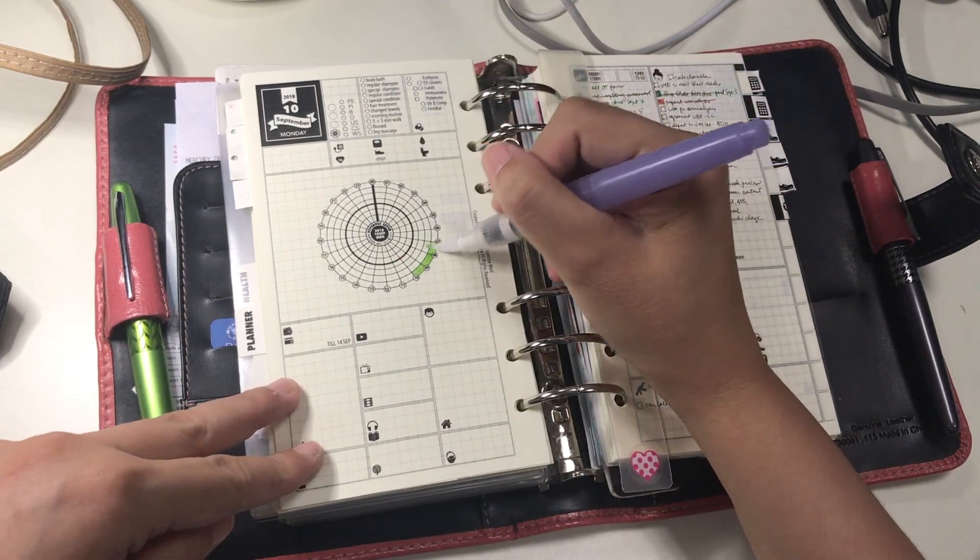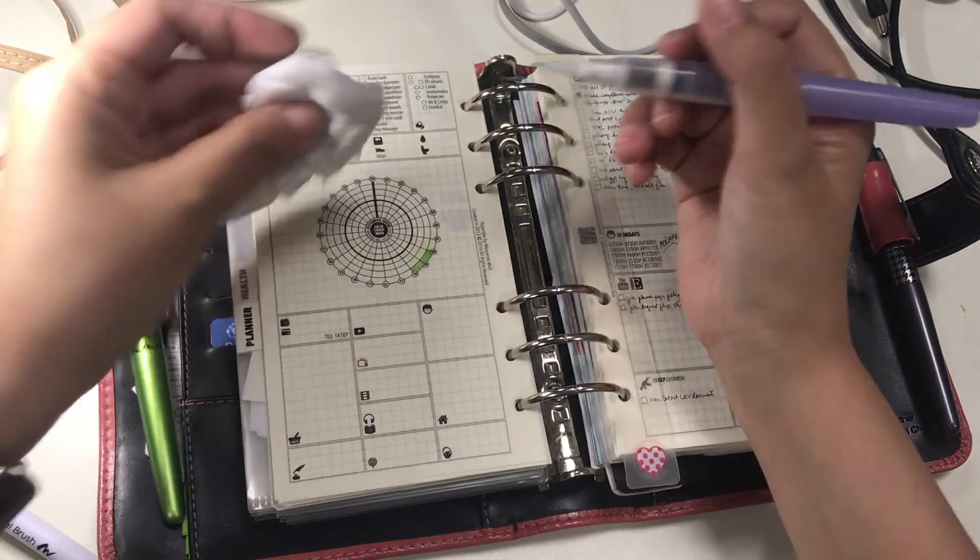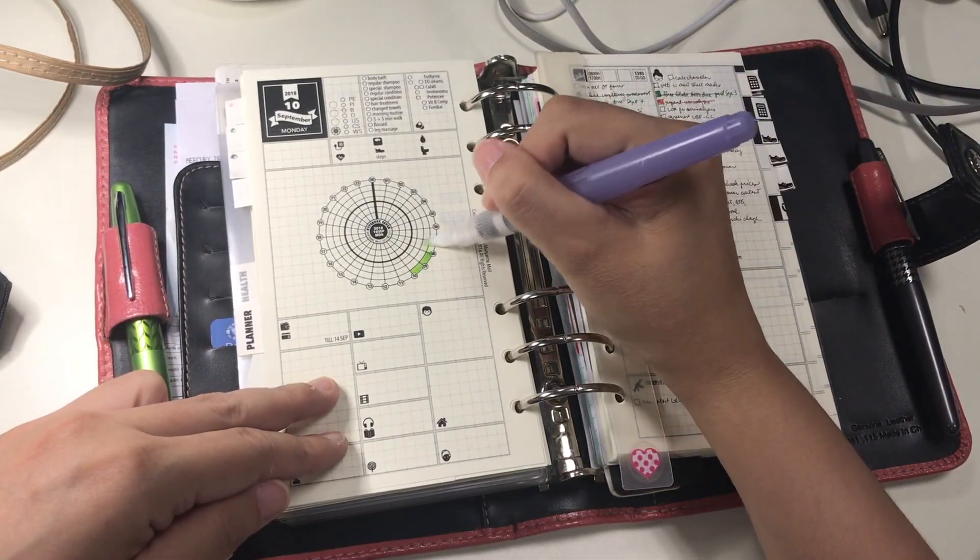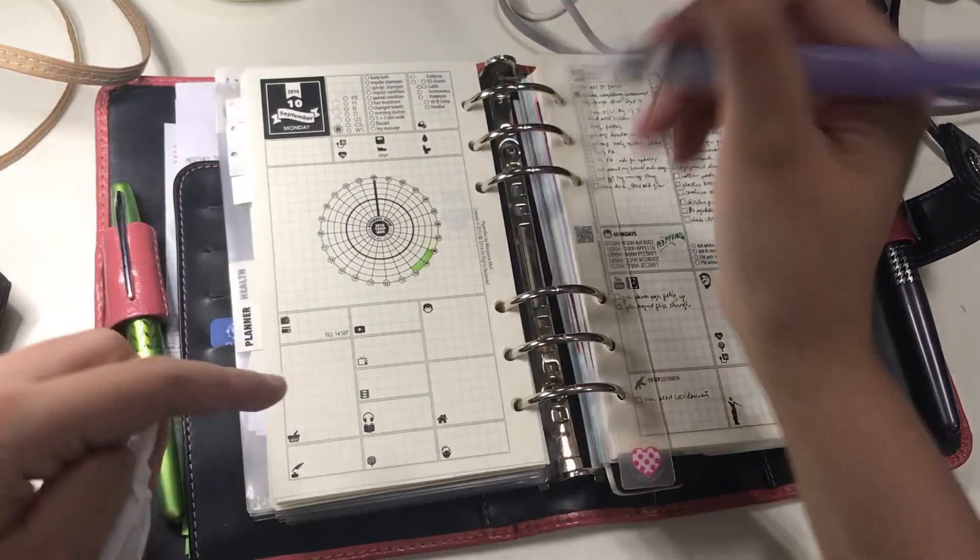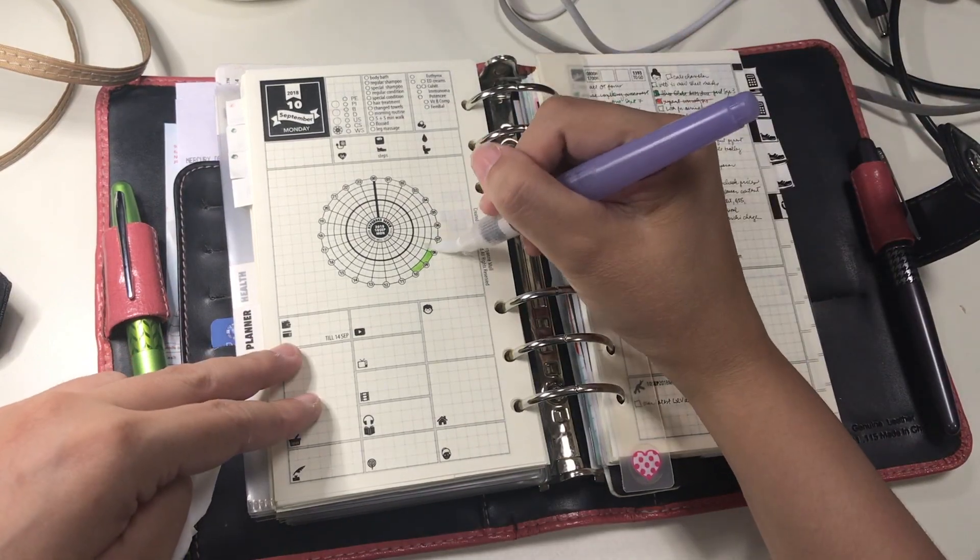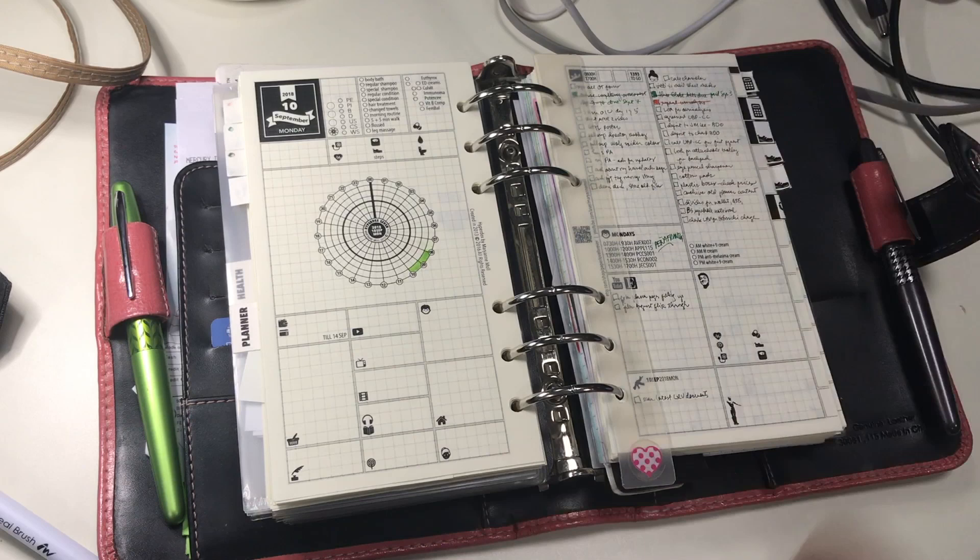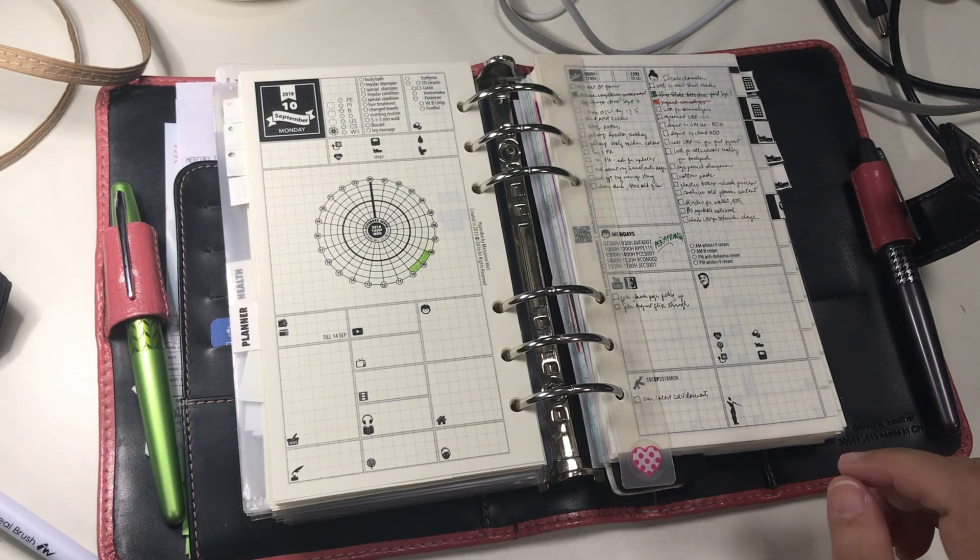Hi everyone! This is Marianne and welcome to my channel. In my time-lapse about how my planner pages fill in during the day, I showed that I made a mistake shading in a portion of my Hyperdex, but I was able to erase it somehow. This video is going to be about that.